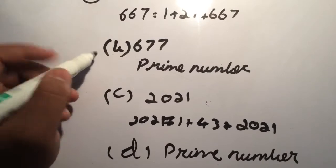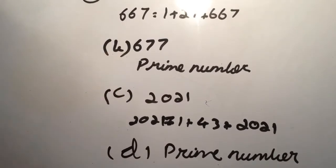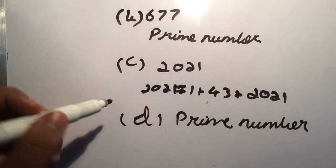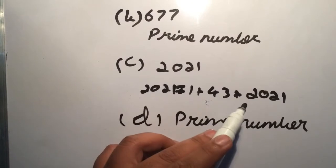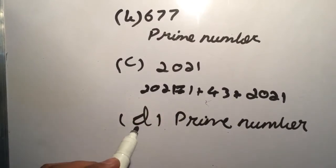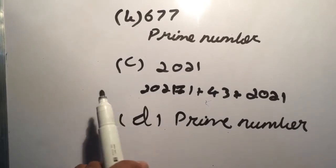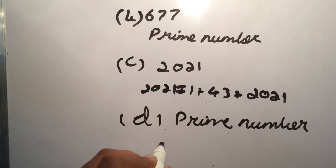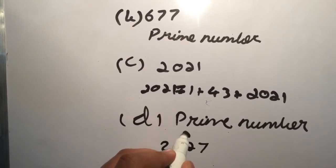Then 2021, part C also has three factors: 1, 43, and 2021, that's why it is composite number. And part D, which is 2027, 2027 is a prime number.